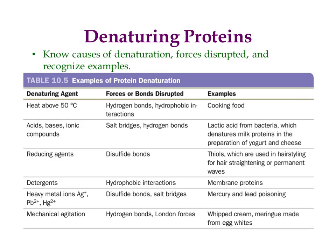There are six causes of denaturation — that just means ways of denaturing. You also want to know the forces that are disrupted and be able to recognize examples. One way that you can denature a protein is by using heat. This is commonly what happens in cooking — lots of foods have a chemical change when you cook them, and the reason is often because the proteins are being denatured by the heat.